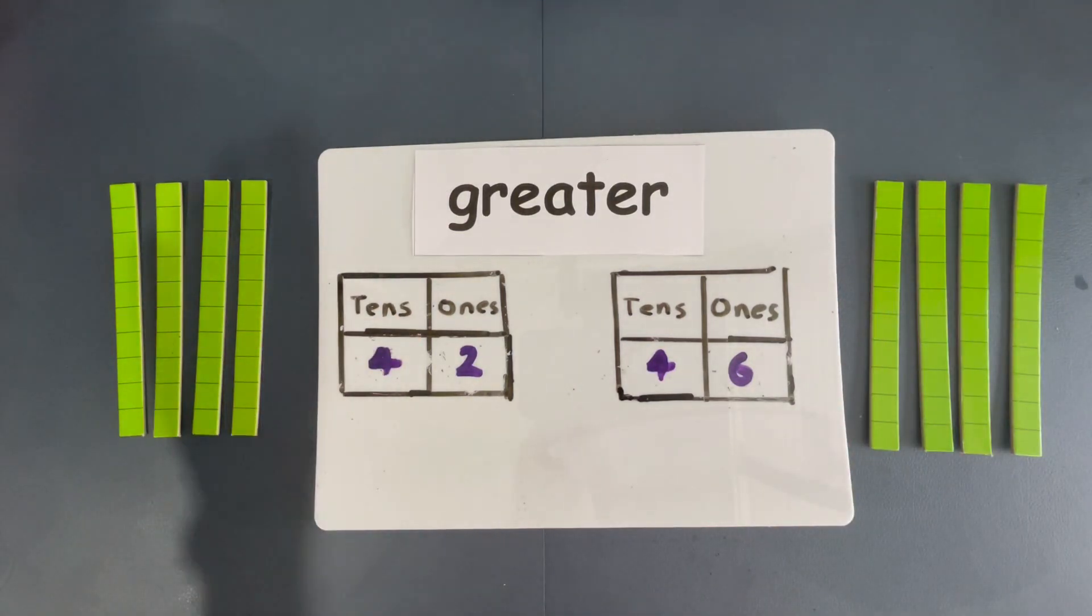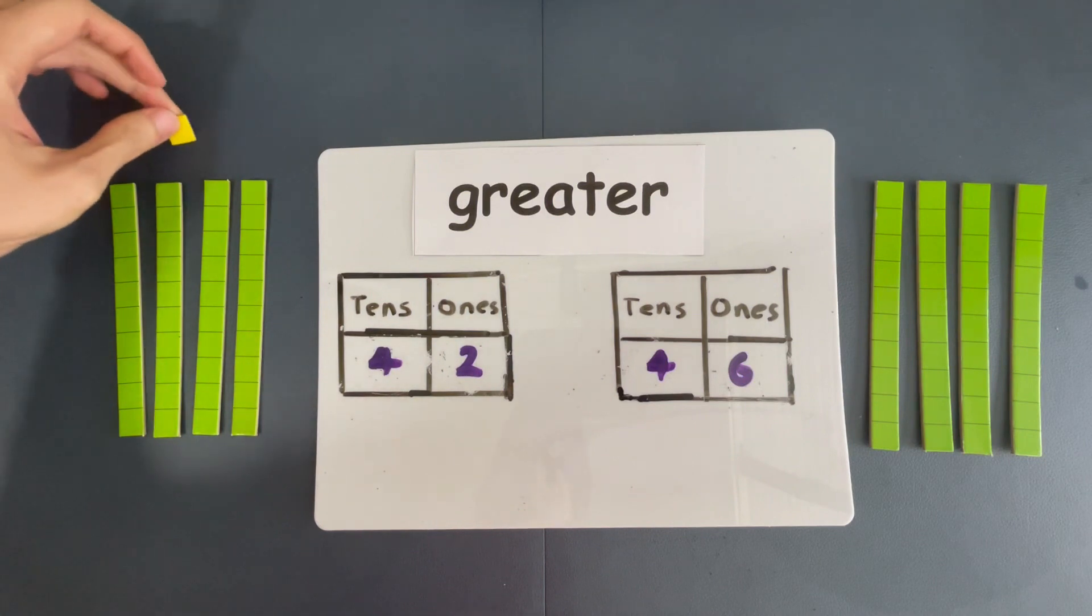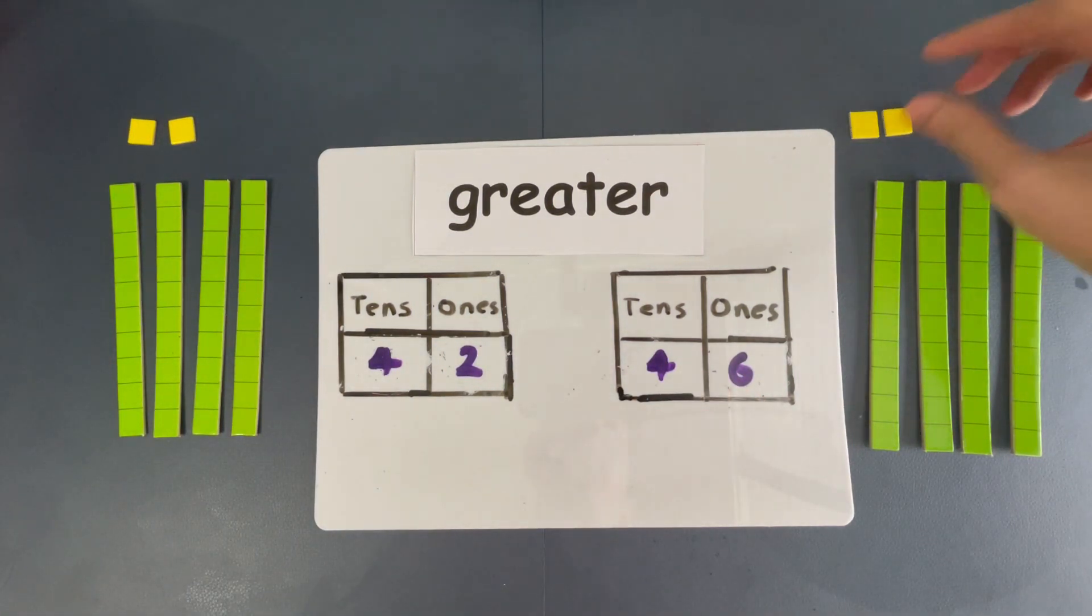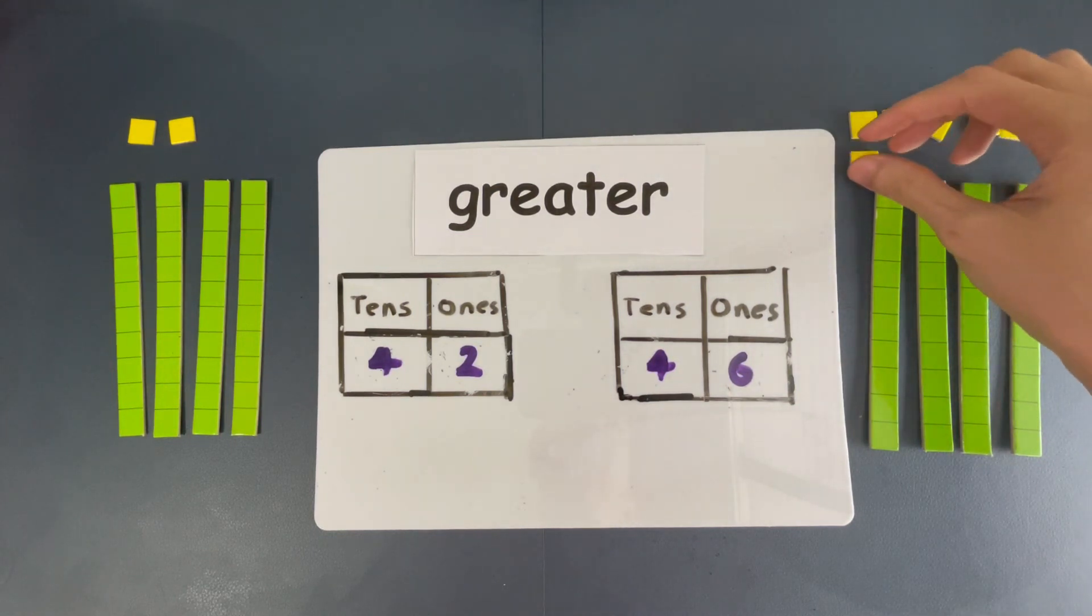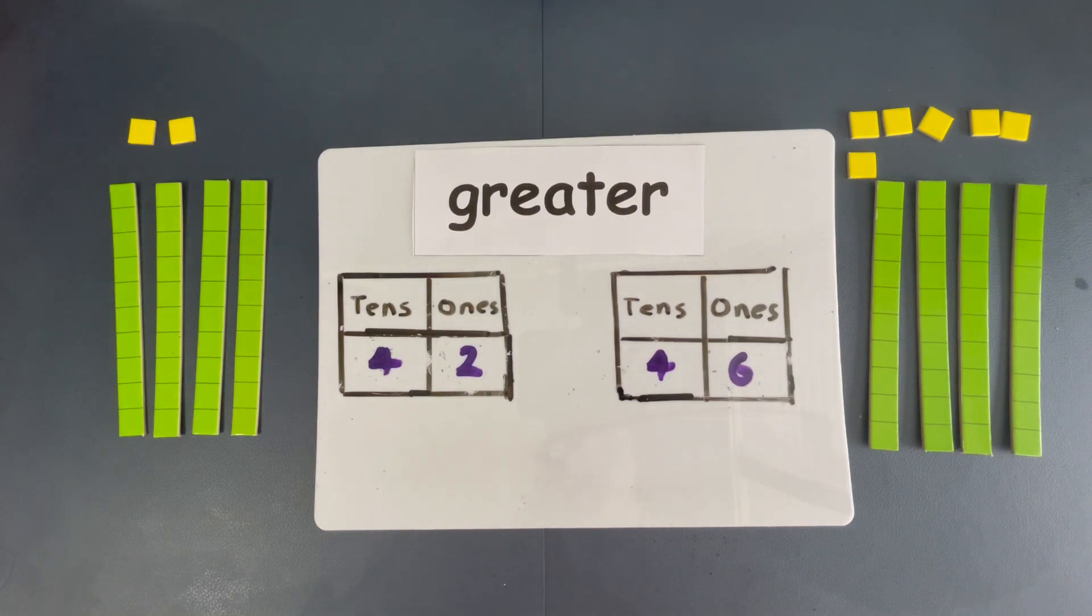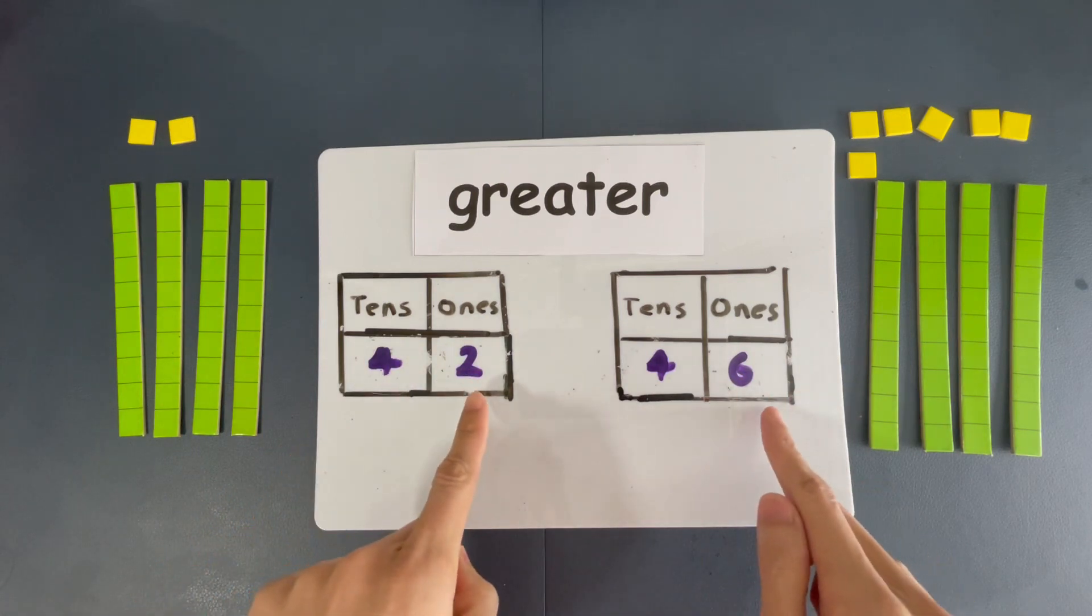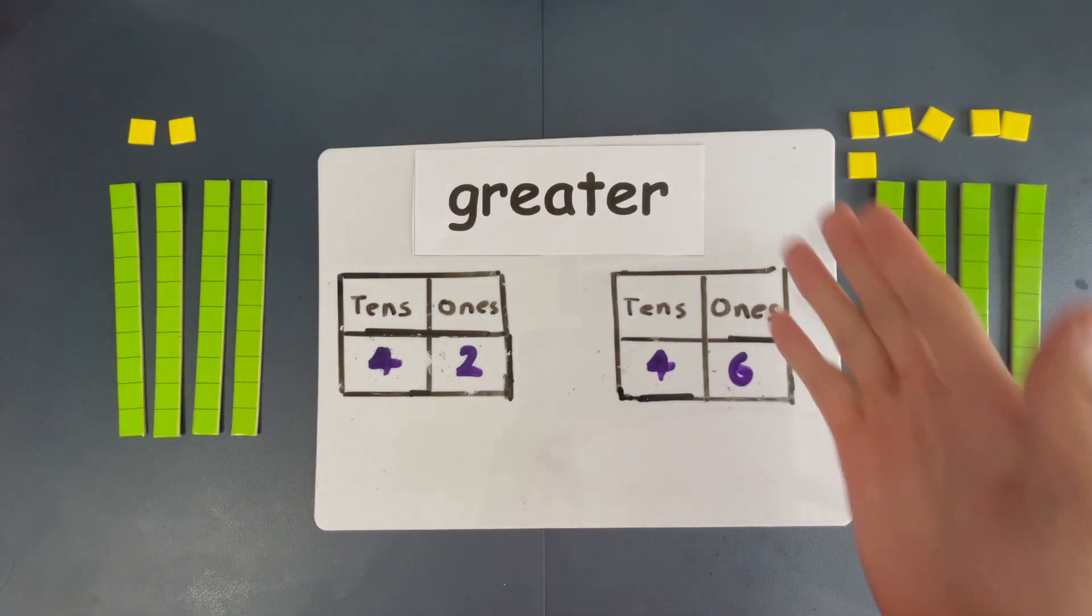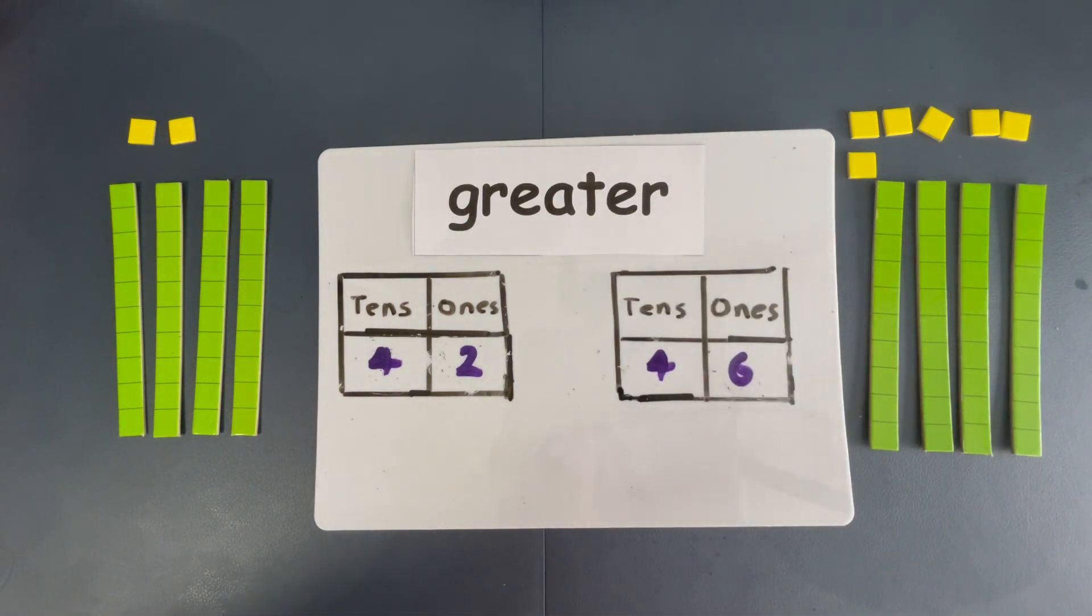Let's start with this one, 42. So, 42 has 2 ones over here. 1, 2. Down here, there's 6. 1, 2, 3, 4, 5, and 6. So, tell me. Very simple question. Which one is greater? This one, 46. So, 46 is the greater number. Okay? Because the tens are the same, we look at the ones. So, this ones is greater. 6 ones versus 2, right? So, 6 wins. So, 46 is the greater number.